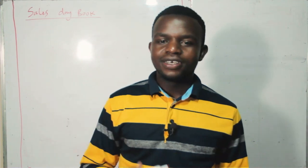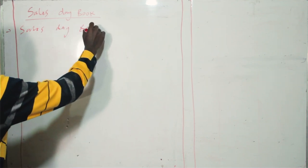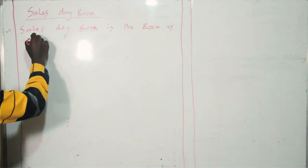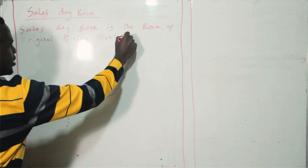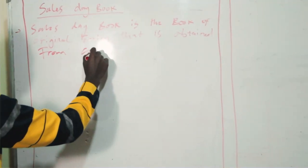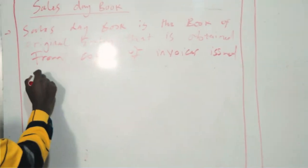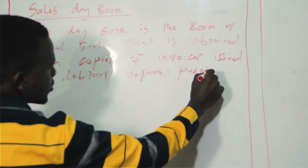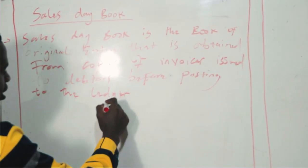I'm going to put the definition on the whiteboard so that you can follow through. The sales daybook is the book of original entry that is obtained from copies of invoices issued to debtors, before posting to the ledger in order of debts.